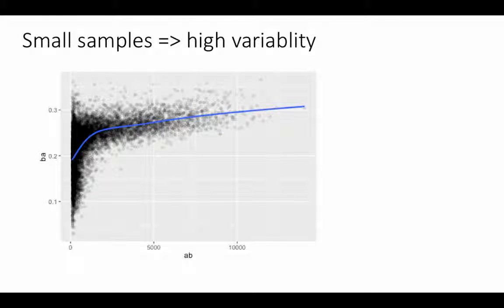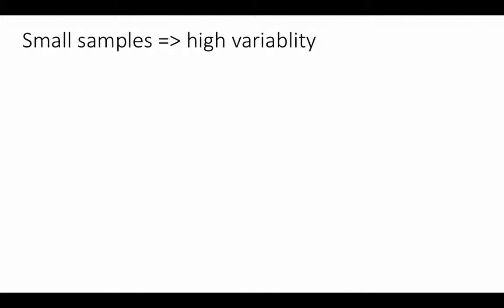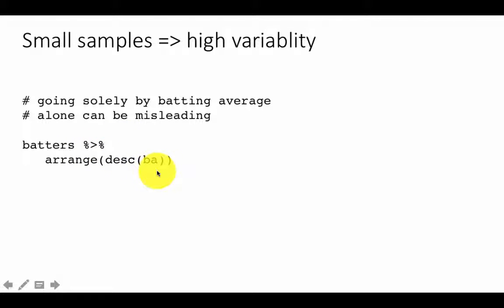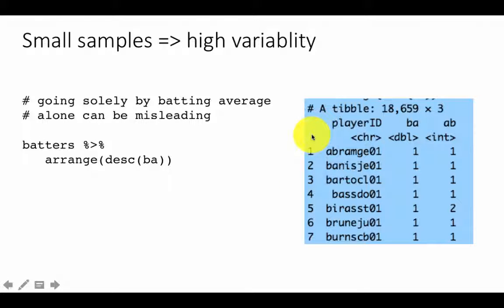This principle becomes extremely important in practice. Suppose you want to look at people who are good players — people who have good batting averages. If we filter or arrange the data by batting average in descending order to find the best batsmen, you would think that would help you find the good players. But if you see the results, there are 18,659 rows.